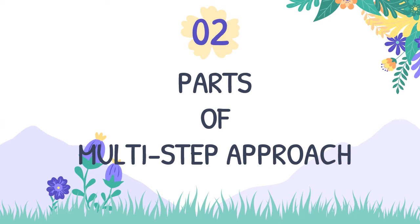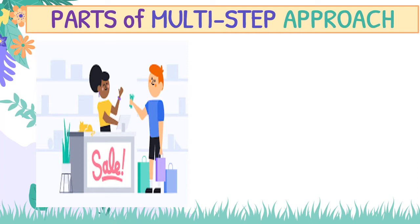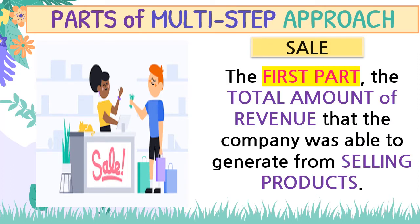So, part of a multi-step approach — according to Haddock, Rice, and Marina (2012), the elements of a multi-step approach of a merchandising company are as follows. The first part is sales: the total amount of revenue that the company was able to generate from selling products.